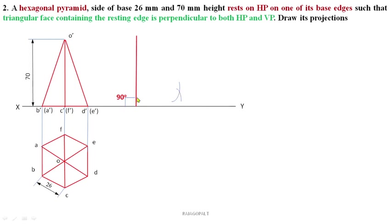Join that intersection point to complete the base of the front view of the hexagonal pyramid. To repeat: take B'A' as center, use D'E' as radius, and draw one arc. Next, take O' as center, use D'E' as the radius, and draw another arc. Both arcs meet at one point — complete the base of the pyramid.